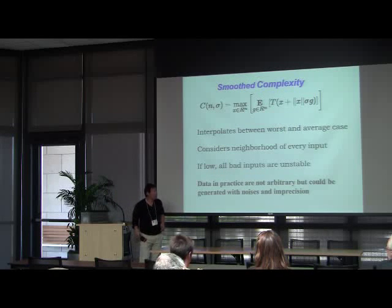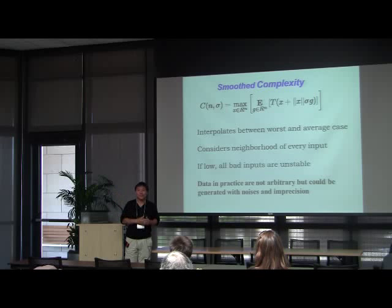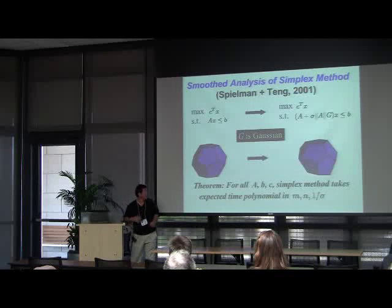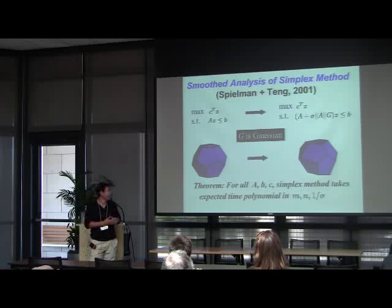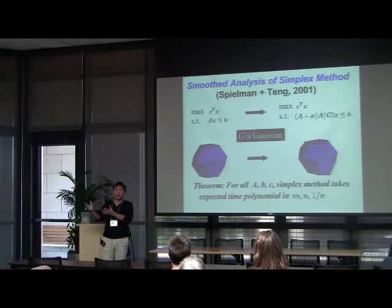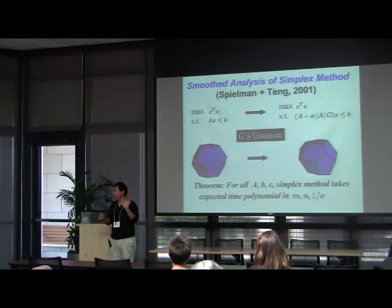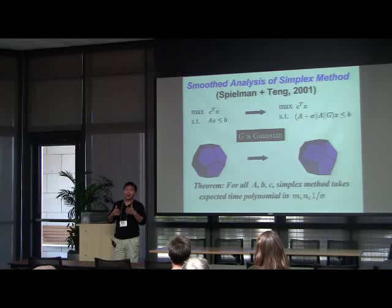If this measurement is small, it basically indicates that in the neighborhood of every input, the performance on average is good. Which means if the practical data has a little bit of noise, then it's very difficult to see a worst-case example. We were able to show that in particular for linear programming, for some variation of the simplex algorithm, if our linear program comes from measurements — you have a noisy part and an intrinsic part — for every intrinsic part, as long as you have noise, in expectation, the simplex algorithm runs in polynomial time as a function of input size as well as 1 over the degree of noise.